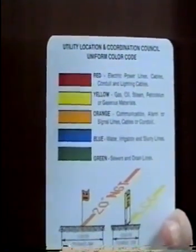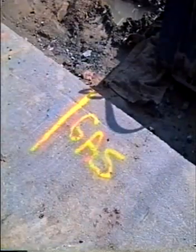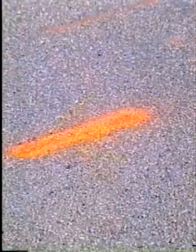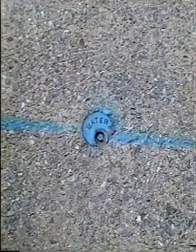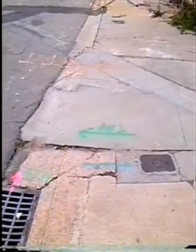Red is for electric power lines, cables, conduit, and lighting cables. Yellow is for gas, oil, steam, petroleum, or gaseous materials. Orange is for communication, alarm, or signal lines, cables, or conduit. Blue is for water, irrigation, and slurry lines. And green is for sewers and drain lines. Where several facilities lie close together, using the color code makes markings distinguishable and understandable to all.